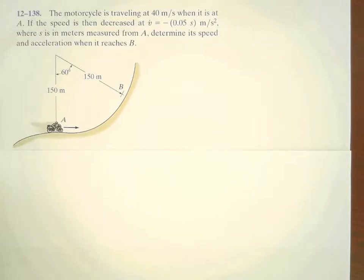In this tutorial, we are dealing with a motorcycle going from point A to point B. And the motion here is needed to be described with normal and tangential axes.